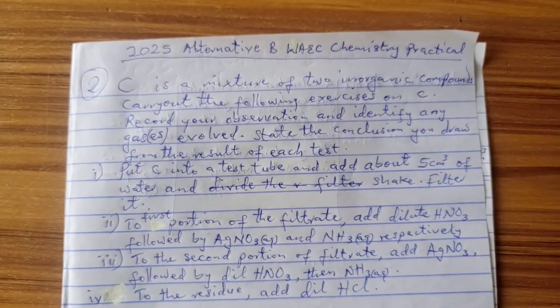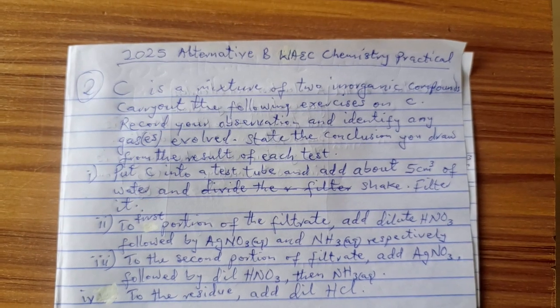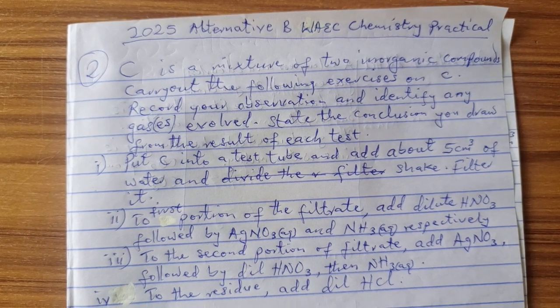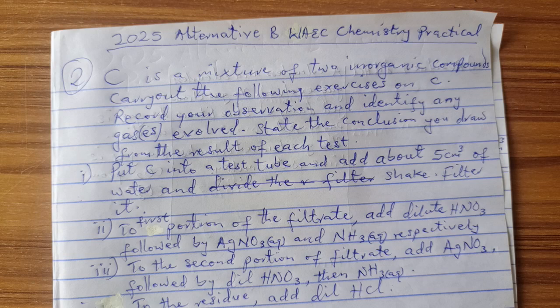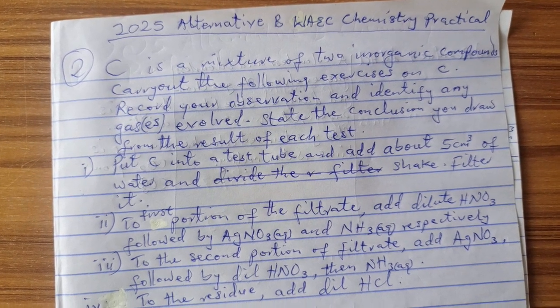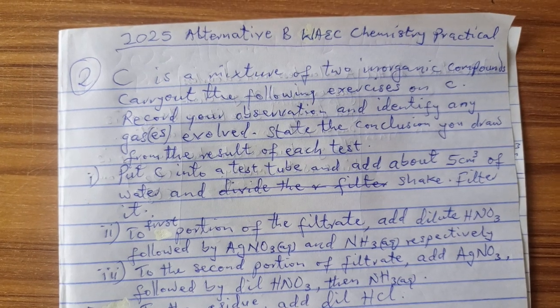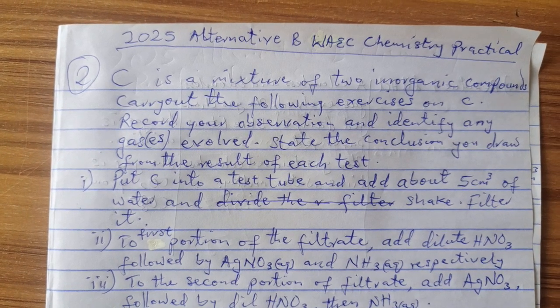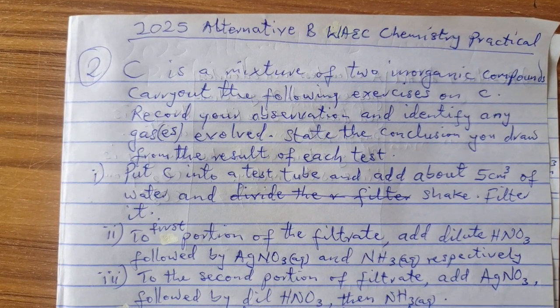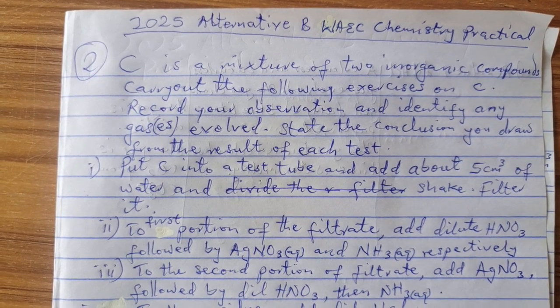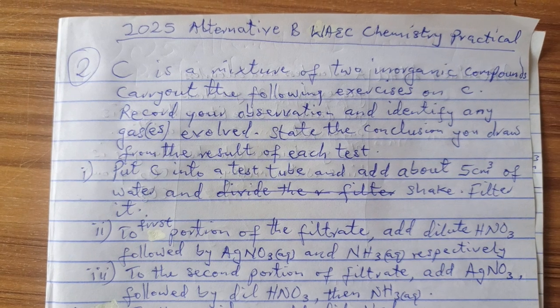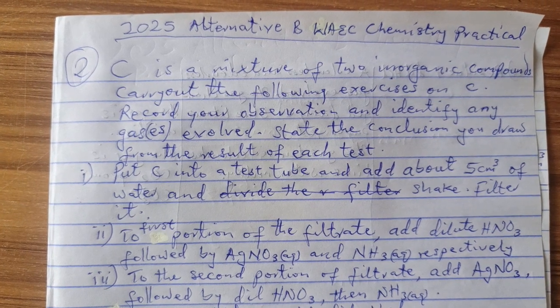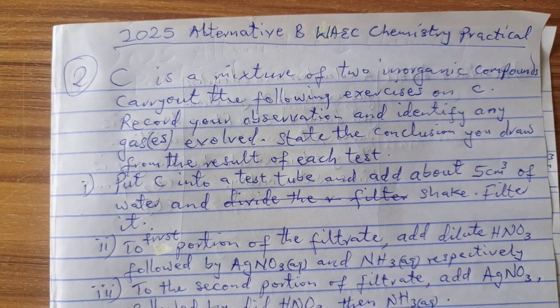Welcome once again to our today's chemistry class. In our class today we are going to be dealing with 2025 alternative B WAEC chemistry practical question 2. I have handled question 1 in our last class and I ask you to look for similar questions and attempt so that by the time you get in there it will be very simple for you. So now coming back here to today's class, we are going to deal with question 2.